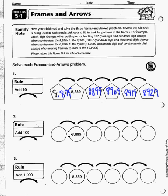When the rule is add 100, we look at the hundreds place. Going back, it's 8,789. The tens and ones place will stay the same.